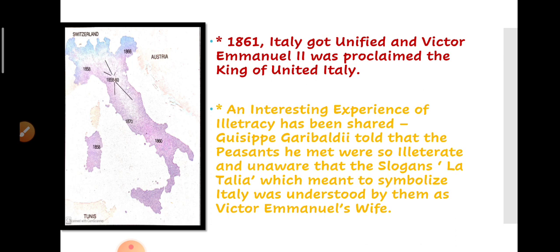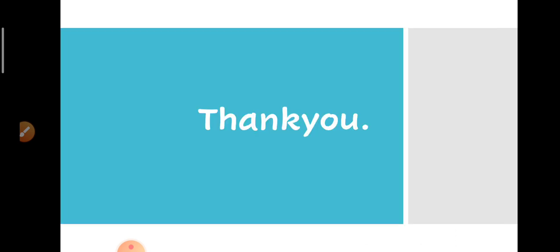You can see in the map in front of you that now all of Italy is coloured with only one colour and there are no different states. This is the picture of unified Italy in 1861. I hope you all understand the complete process of unification of Italy. Thank you and have a great day.